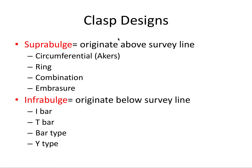Clasp designs can be categorized in two main categories. We have supra-bulge clasps, which originate above the survey line — examples include the circumferential or acres clasp, ring clasp, combination clasp, and brazier clasp. And infra-bulge clasps originate below the survey line, and these include various bar-type designs.